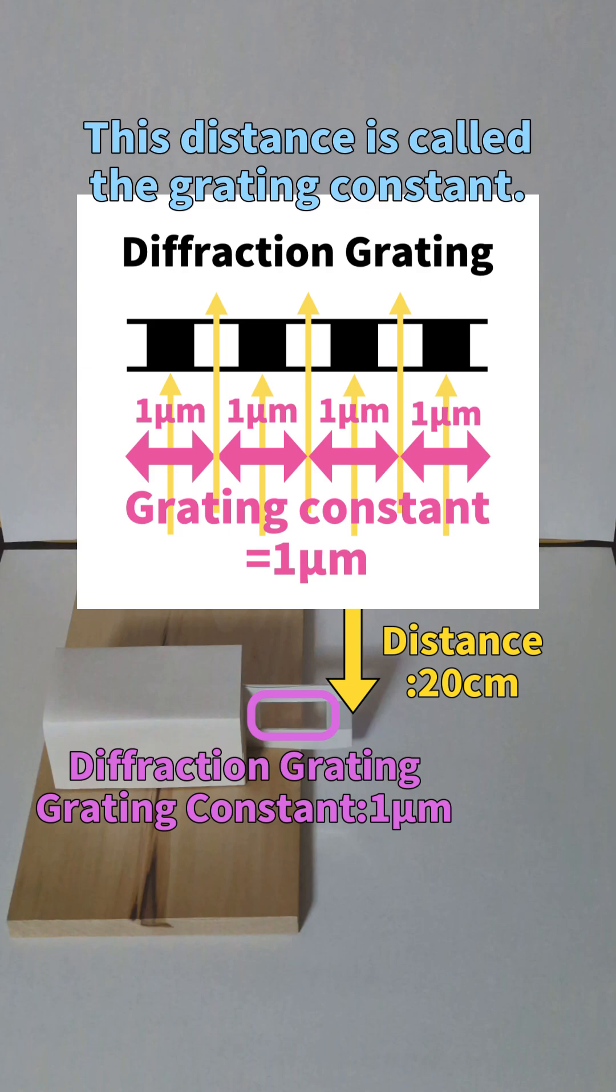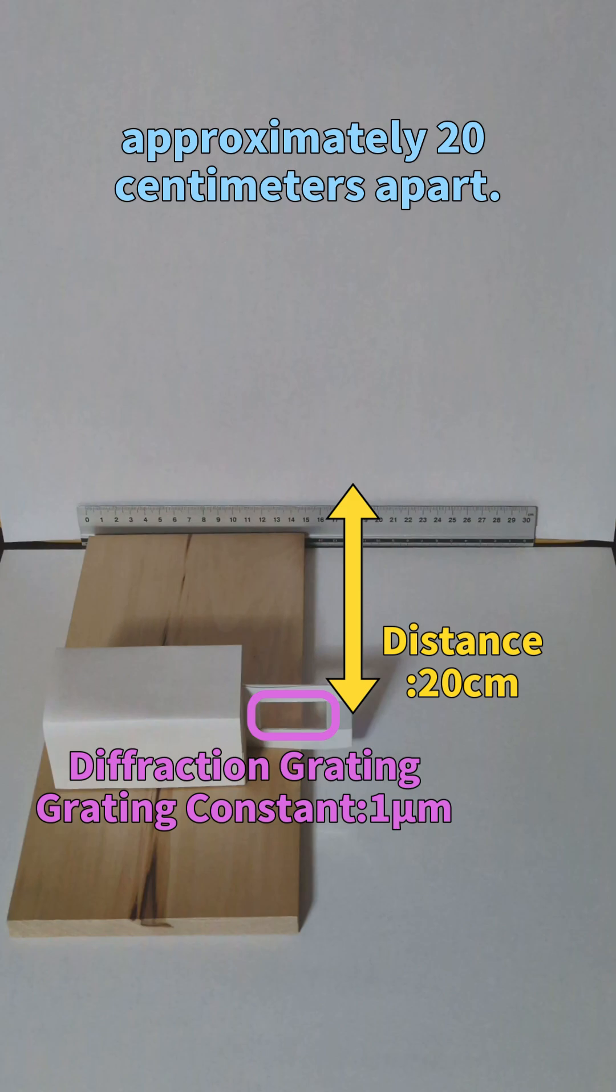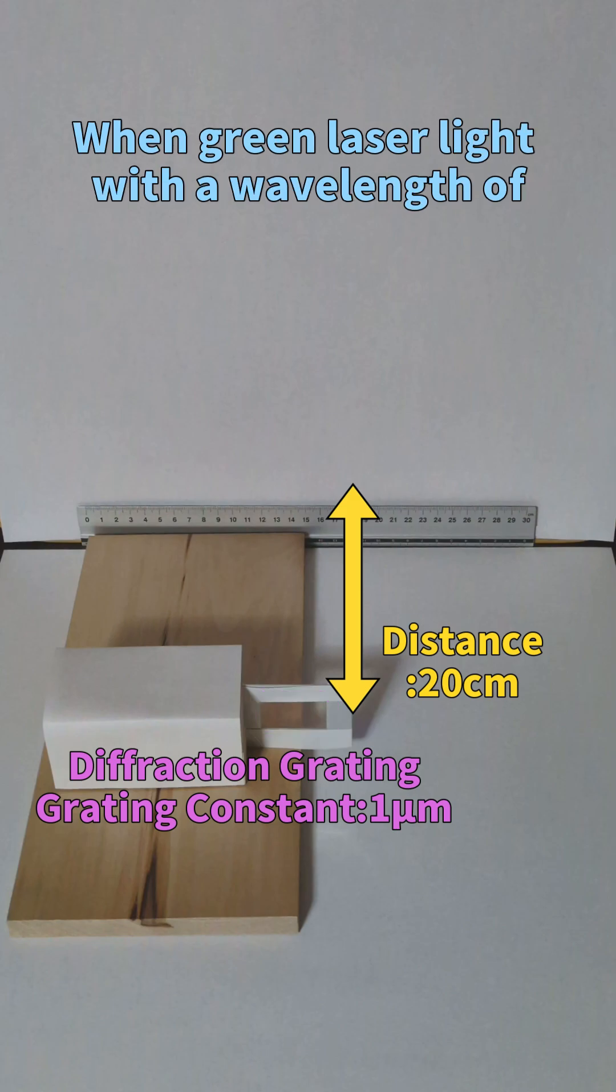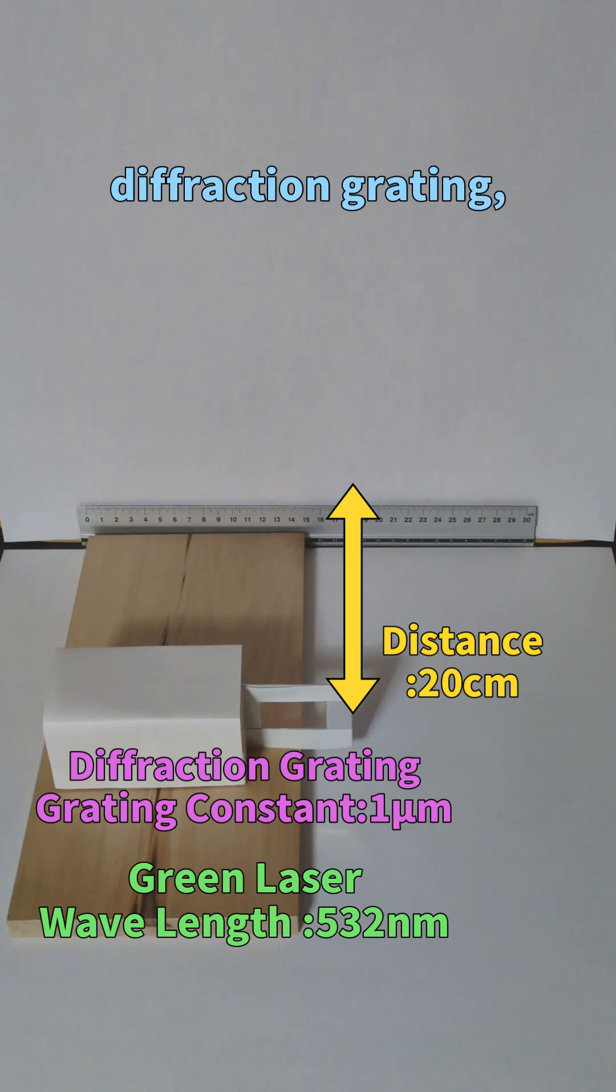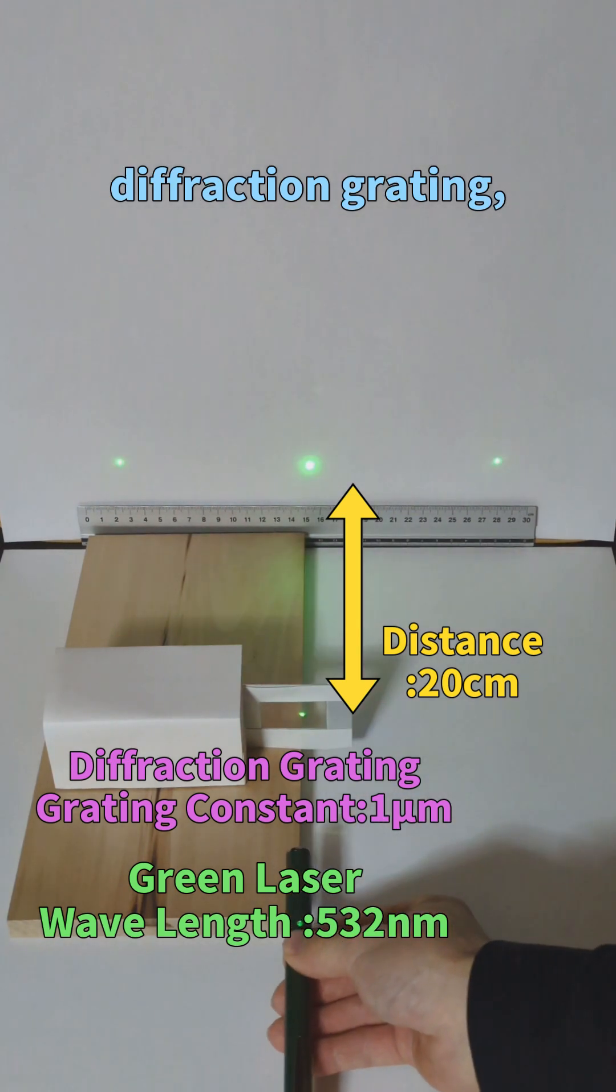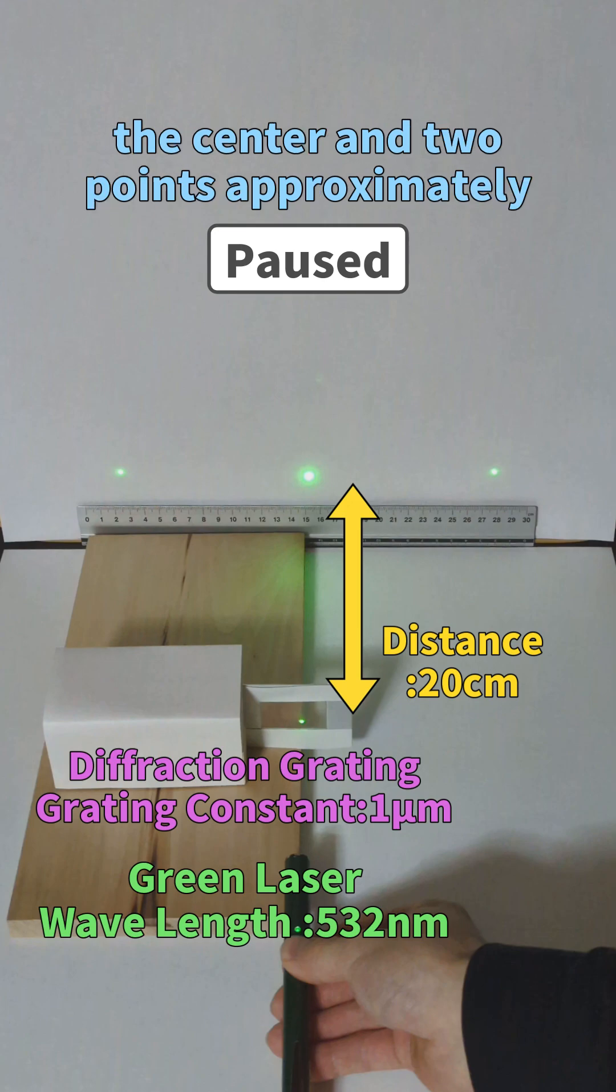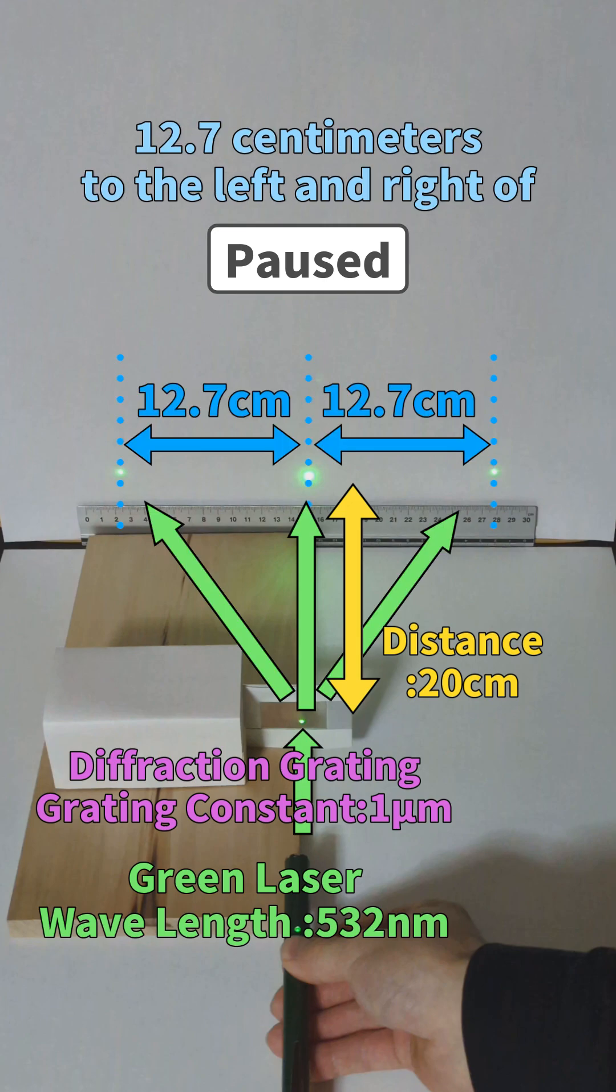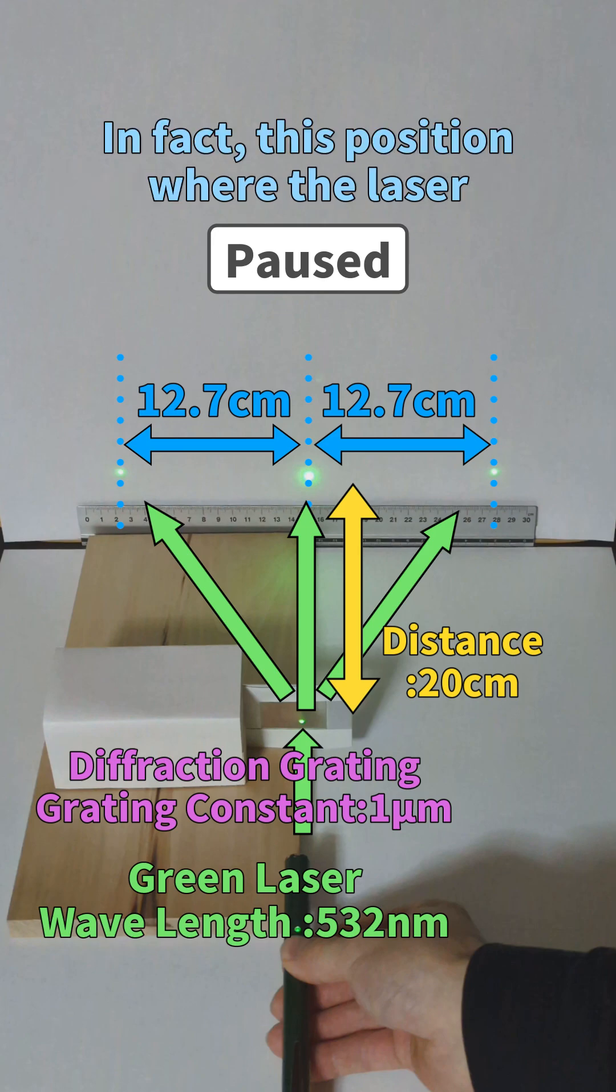The diffraction grating and the screen are approximately 20 centimeters apart. When green laser light with a wavelength of 532 nanometers is incident on the diffraction grating, it splits and reaches three points: the center and two points approximately 12.7 centimeters to the left and right of the center on the screen.